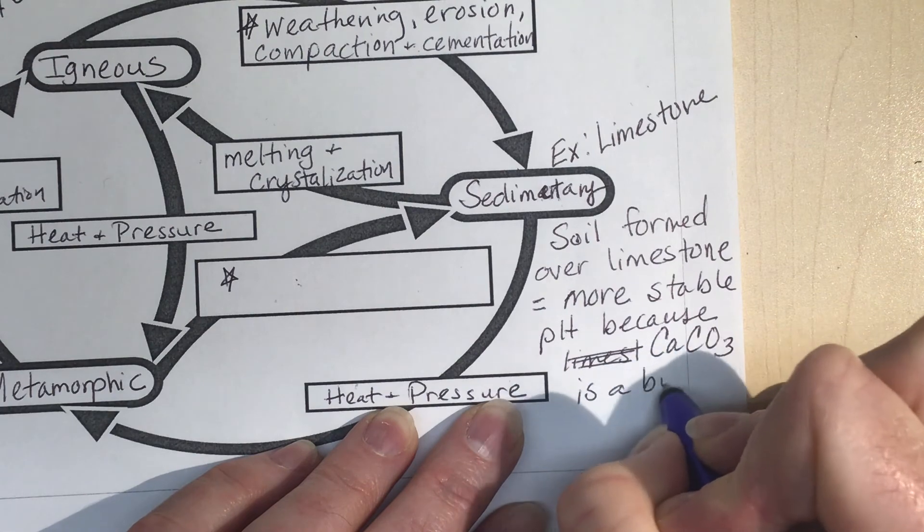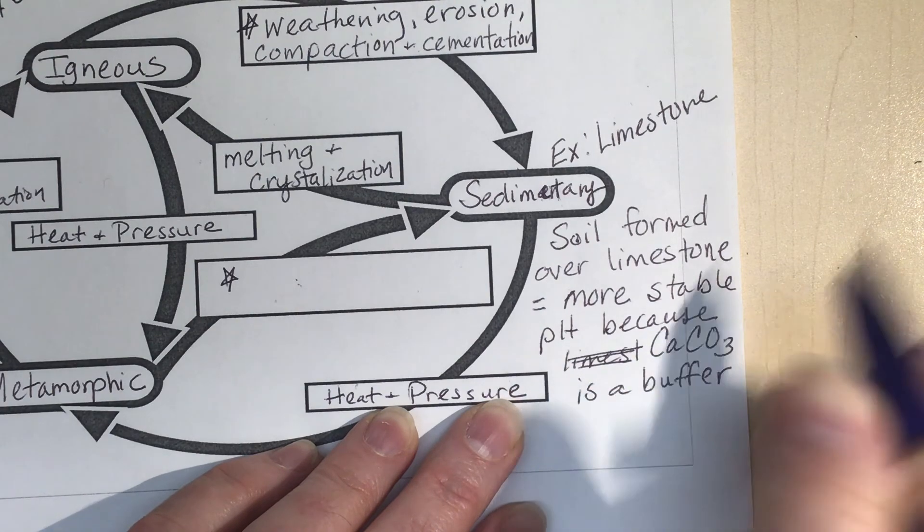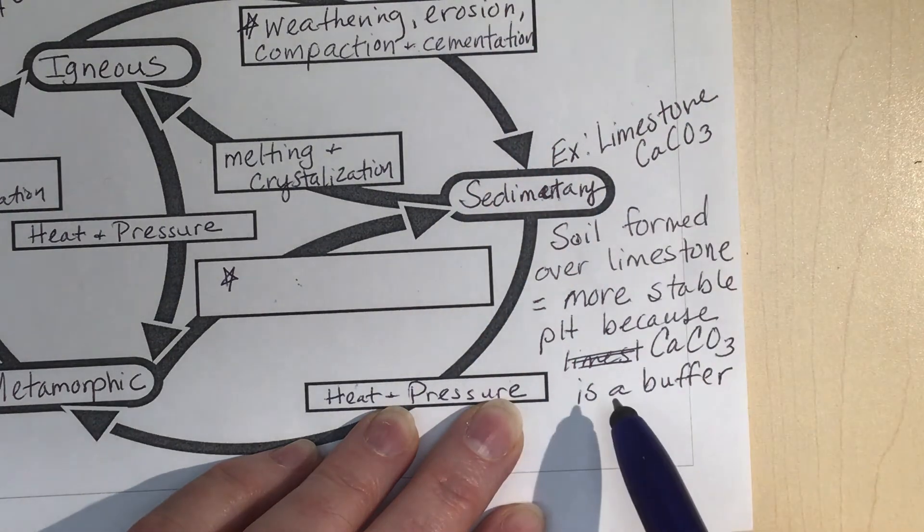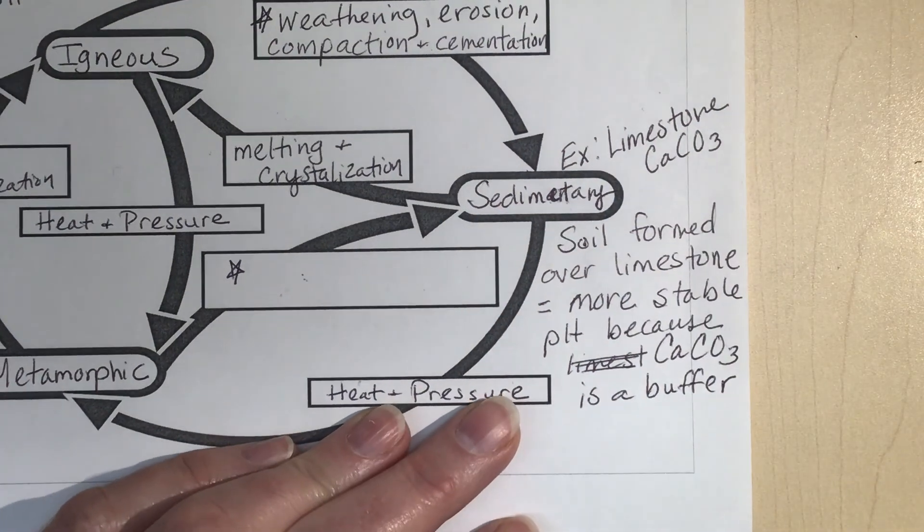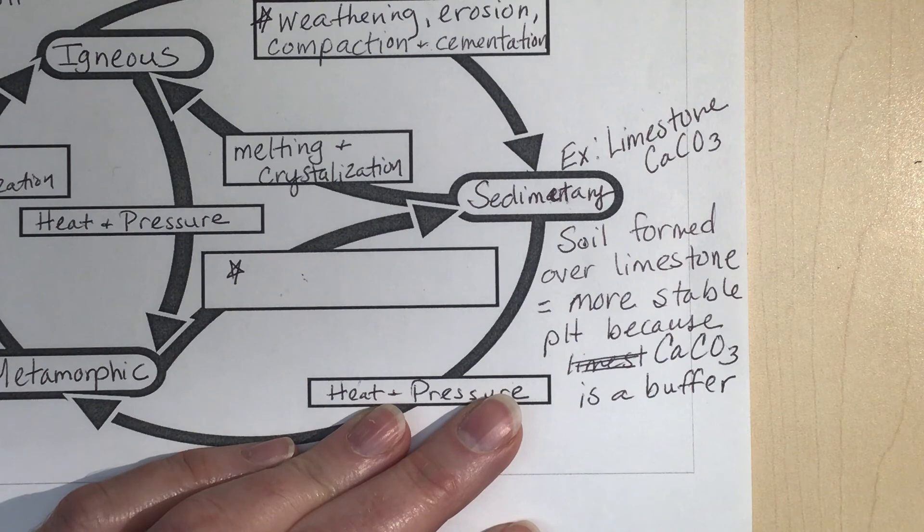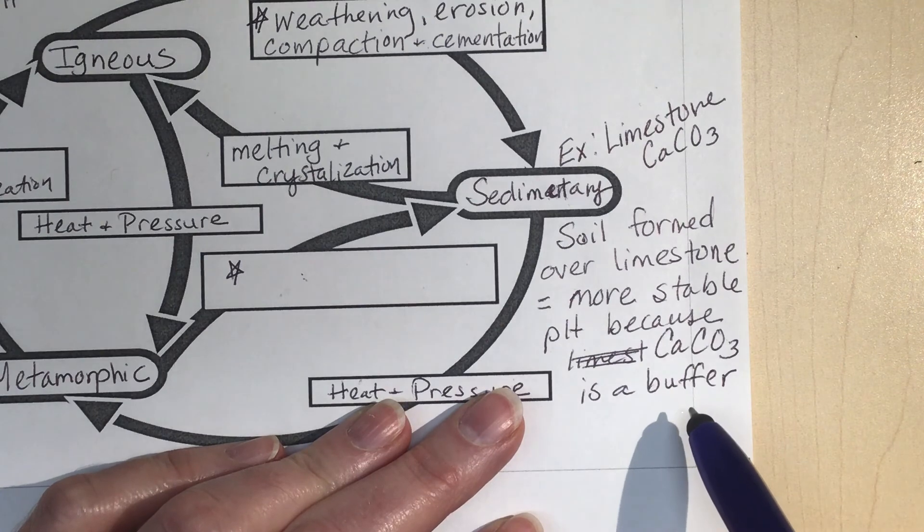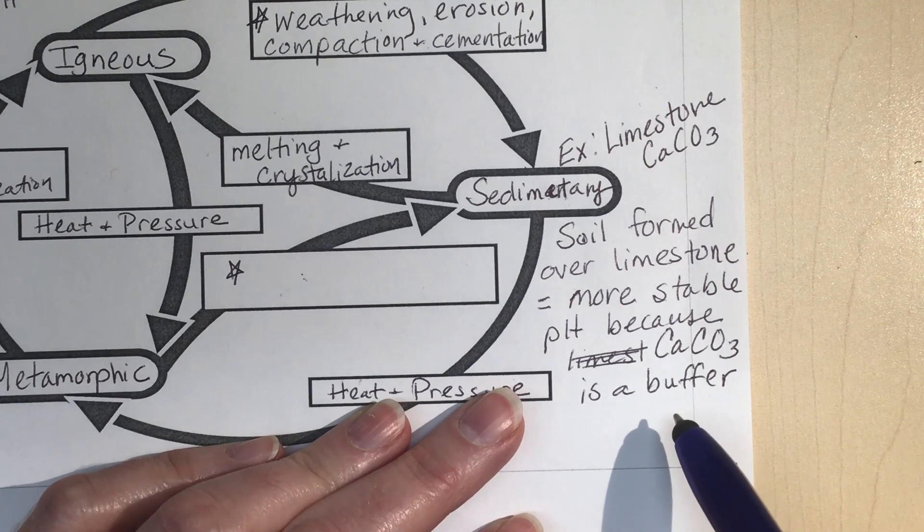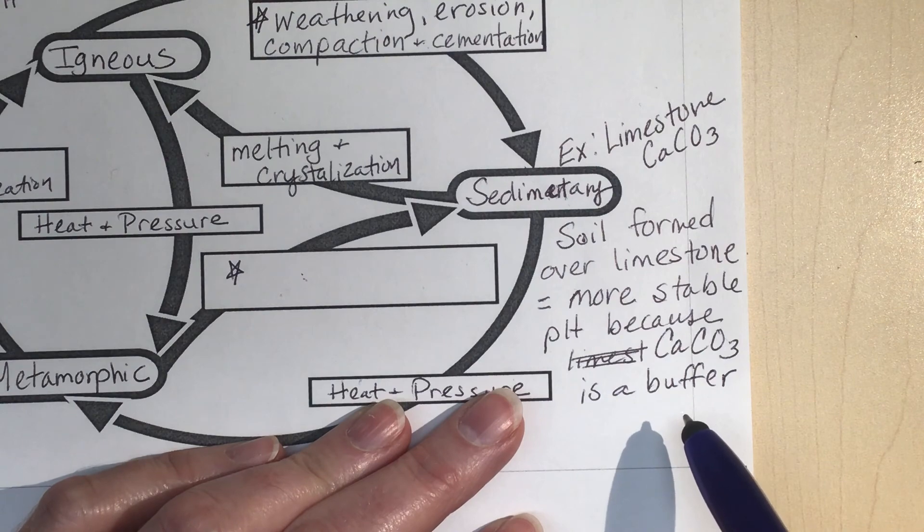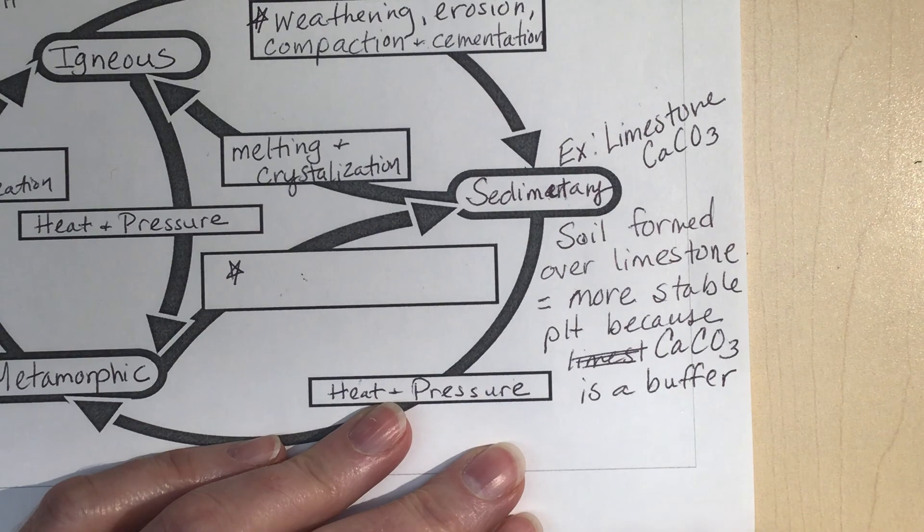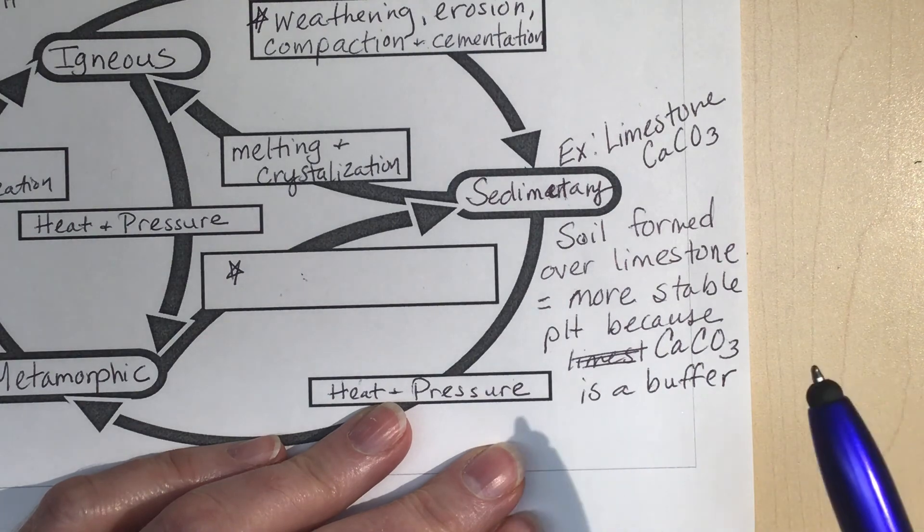So we'll say the calcium carbonate is a buffer. Okay, so limestone is calcium carbonate, and if you remember back to chemistry, a buffer is something that helps prevent changes in pH. So if you have something like acid rain and the acid rain hits this soil that has a lot of calcium carbonate in it, it will resist pH change.